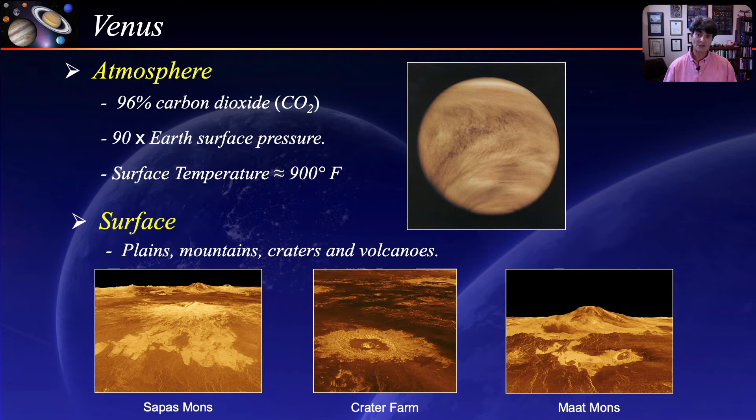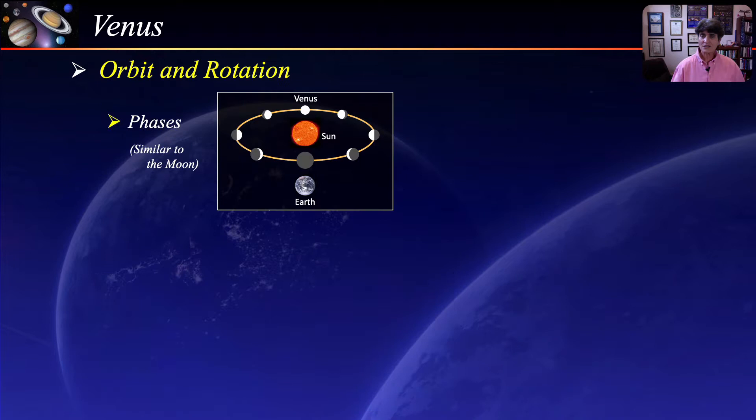The atmosphere acts like a blanket, trapping the emitted radiation from the surface of Venus, causing surface temperatures over 900 degrees Fahrenheit — hotter than Mercury's daytime side and hot enough to melt lead. Radar maps of the surface reveal a relatively low, rolling terrain dotted with mountains, craters, and volcanoes. These are computer-generated images from data gathered by the Magellan spacecraft. Because Venus's orbit is between the Earth and the Sun, it goes through phases similar to the Moon, and viewed with a small telescope, Venus often looks like a tiny Moon.